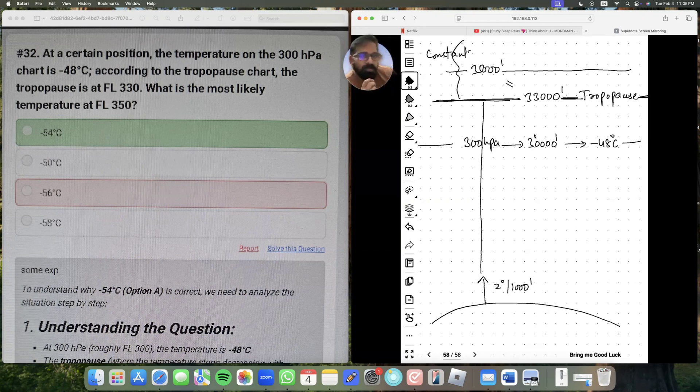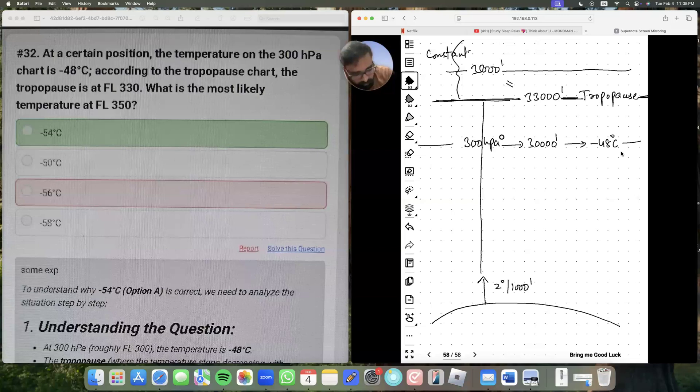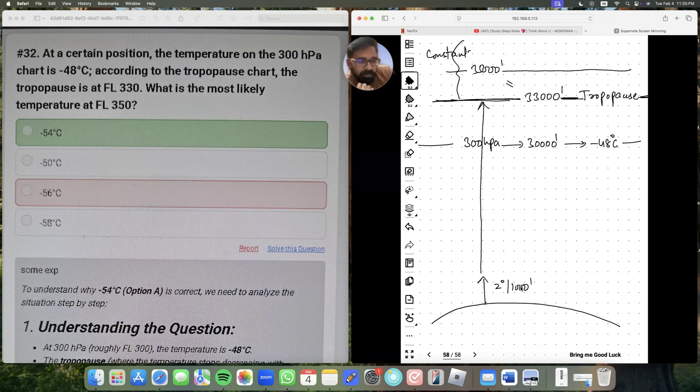After understanding this logic, if we move forward: At 30,000 feet, the temperature is minus 48. Now, because it is below tropopause, as you go up, the temperature falls at the rate of 2 degrees per 1000 feet. So how many 1000 feet are there between 30,000 and 33,000? 3000. So every 1000 feet temperature falls by 2 degrees centigrade. For 3000 feet, temperature will fall by 6 degrees centigrade.